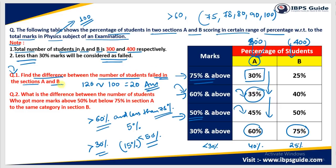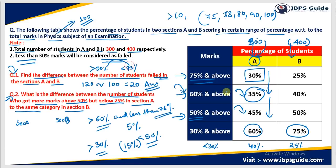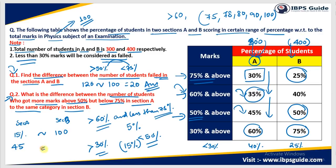Question 2 asks: what is the difference between the number of students who got marks above 50% but below 75% in section A versus the same category in section B? For section A, 50% and above is 45%, and 75% and above is 30%. The difference is 15%. So 15% of 300 is 45 students. For section B, 50% and above is 50%, and 75% and above is 25%. The difference is 25%. So 25% of 400 is 100 students. The difference between section A and section B for this range is 100 minus 45, which equals 55. So the answer is 55.